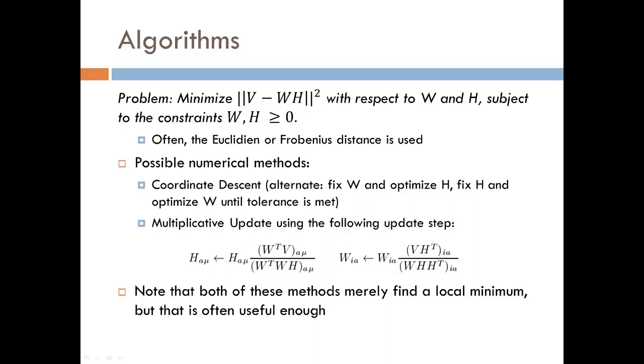Since W and H can both vary, there are two popular approaches for solving this problem numerically. The first is coordinate descent, whereby first we fix W and optimize H with gradient descent. Then we fix H and optimize W with gradient descent. This process is repeated until a tolerance is met.